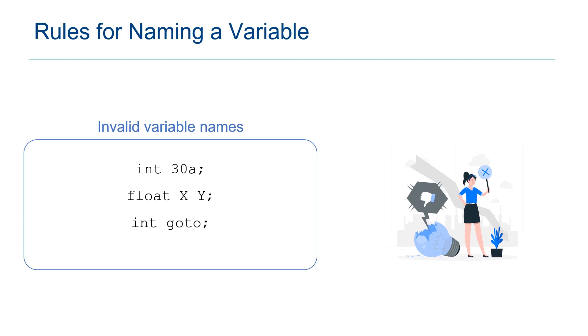Now let's look at some invalid variable names. For example, int 30a - a variable name cannot start with digits. In the next example, we cannot have white space within a variable name, and variable name cannot be a keyword.